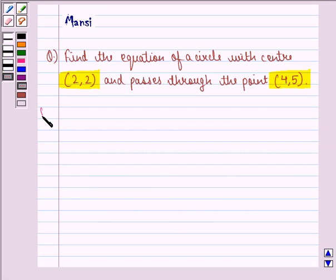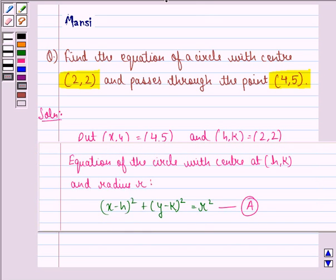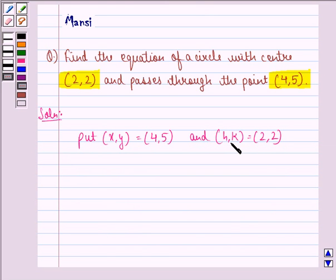Let us start with the solution to this question. First of all, we put (x,y) to be equal to (4,5) and (h,k) to be equal to (2,2) in this equation because it is given to us that the circle passes through the point (4,5) and it has its center at the point (2,2).